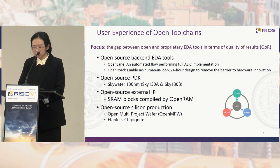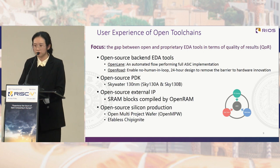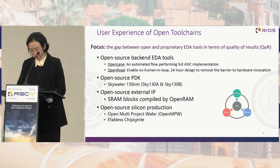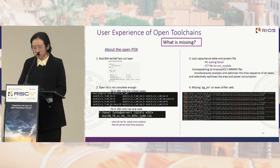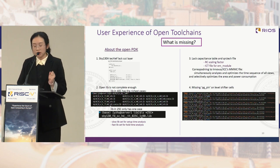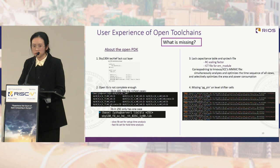One of the challenges the community faces is the gap between open and proprietary tools in terms of QoR and runtime. We quantified this gap by hardening GreenRail, using open EDA tools OpenROAD and OpenLANE. We constructed GreenRail's iCache and dCache using SRAM blocks compiled by the OpenRAM project. For the open PDK, the Sky130A technology LEF file lacks cut layer, so we had to add it manually. For synthesis, we need slow and fast library sets for setup and hold time analysis, but even the 40°C cells with the richest corners are still insufficient for timing optimization, and the 25°C cells have just one corner case.